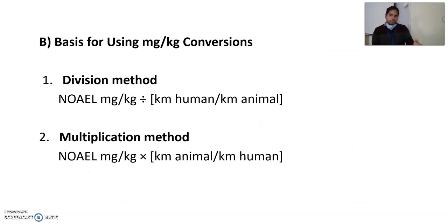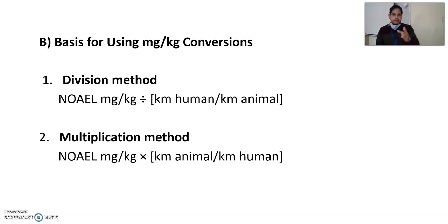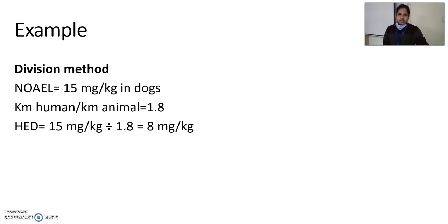To convert mg per kg dose to mg per m², there are basically two methods: the division method and the multiplication method. In the division method: HED = NOEL (mg per kg) divided by (KM human / KM animal) — these values come from the conversion table. In the multiplication method: NOEL (mg per kg) multiplied by (KM animal / KM human). These are inverse of each other. Both methods will give the same result, as we will see in the next example.